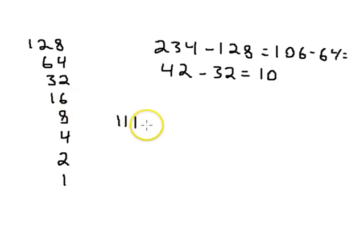Can we subtract 16? No, we cannot. Can we subtract 8? Yes, we can. Subtract 8 from that, we're left with 2. Can we subtract 2 from that? Well, 4 we cannot subtract that. We can subtract 2. So minus 2 equals 0. And we cannot subtract 1 from 0, so we put a 0 there.